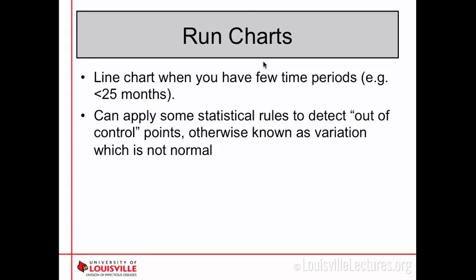Otherwise, if you have a common outcome, you could instead look by week and see variation that way. But if you have rare events, it may be better to try and combine some of your time together. Typically, if you have less than 25 data points, you want to use a run chart. There are statistical rules you can use to detect what's considered out-of-control points where the variation is not normal.